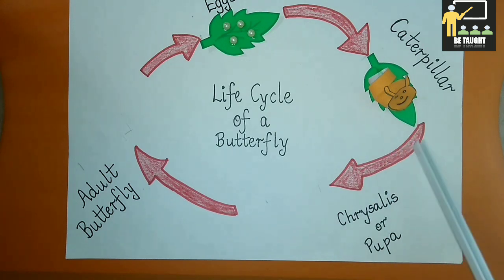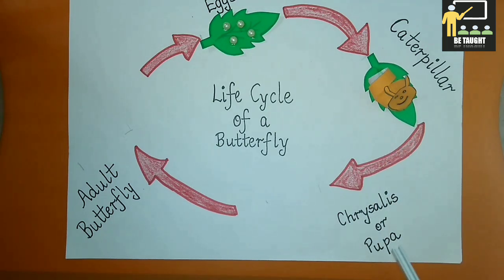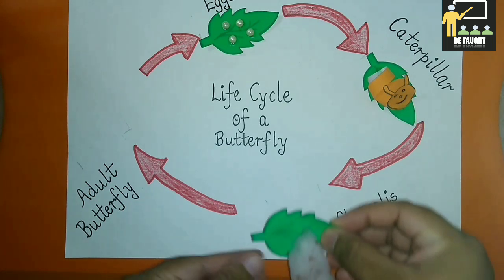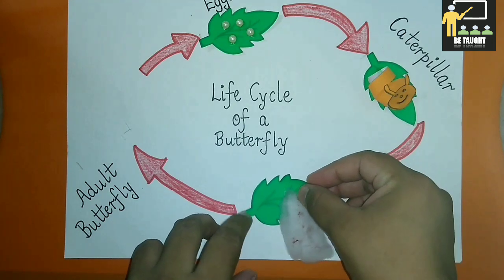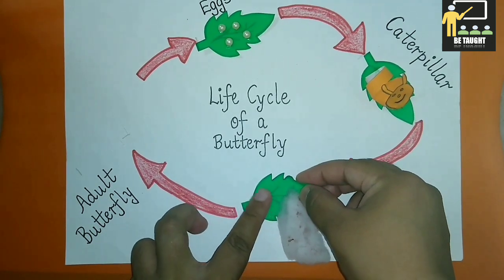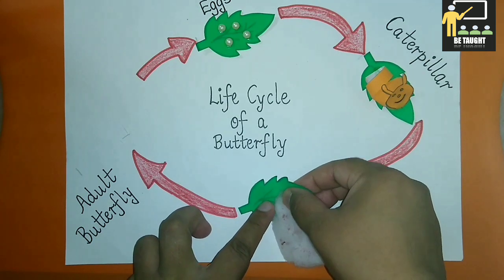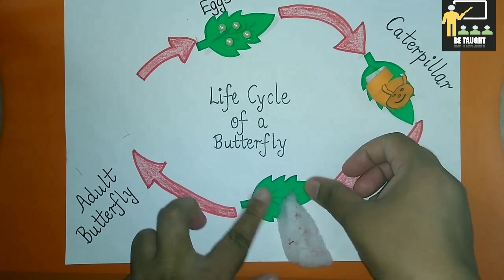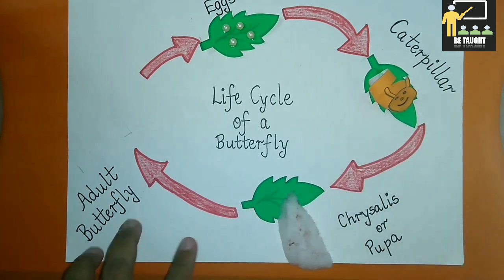The third stage is the chrysalis or pupa. The caterpillar then forms a protective layer around itself. This stage is called chrysalis. In this stage, the caterpillar is now called pupa. Inside the chrysalis, the pupa undergoes a series of changes.